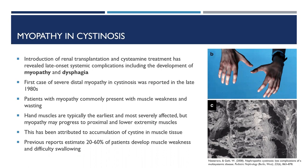In the late 1980s, the first case of severe myopathy in cystinosis was reported. This patient presented with dysphagia around 20 years of age, followed by hand and muscle weakness, and then wasting of both proximal and distal upper and lower extremities. The photo on the top right shows muscle wasting and atrophy of the hand muscles, and other studies have had similar findings — the hand muscles are often first affected and most severely, attributed to accumulation of cystine in muscle tissue, which you can see on the bottom right.